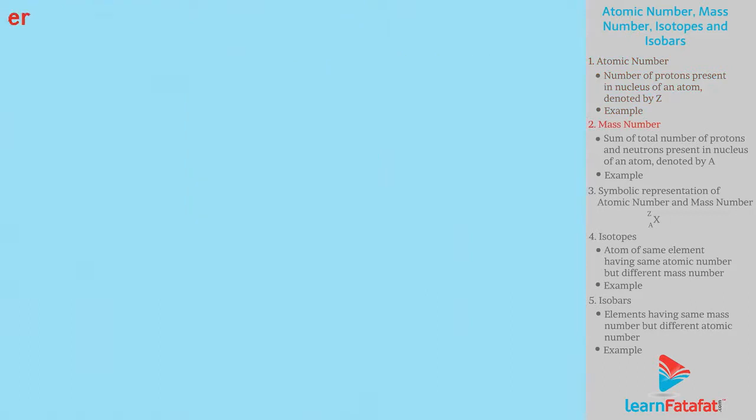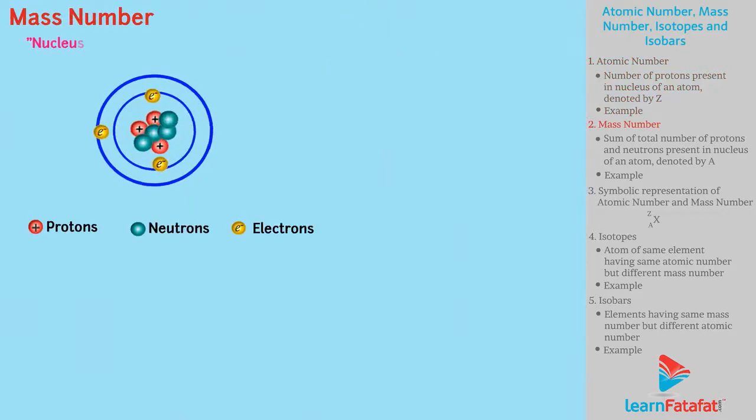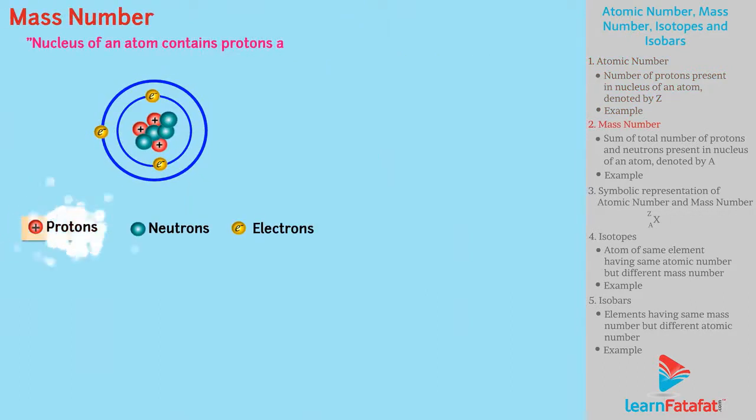Mass number. Nucleus of an atom contains protons and neutrons collectively called as nucleons.